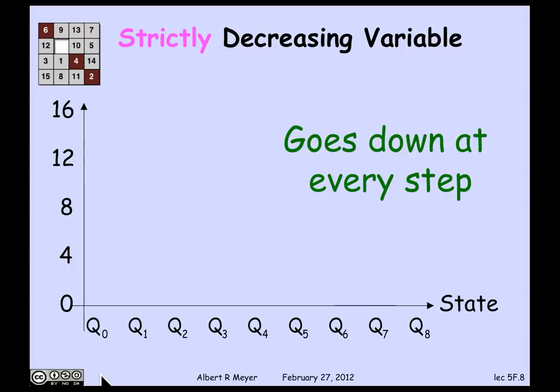So in general, the concept of a strictly decreasing variable is one, as shown here, that at every step of the state machine in each transition, it gets strictly smaller.